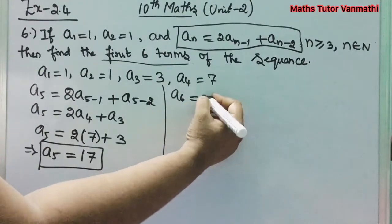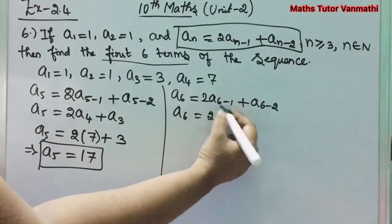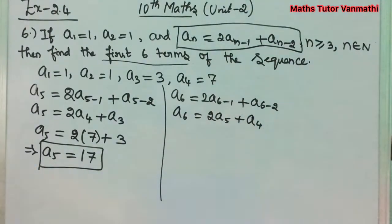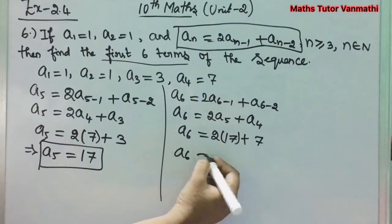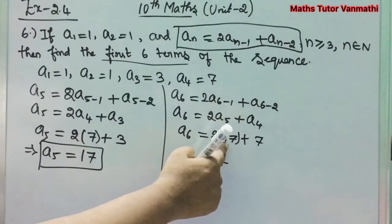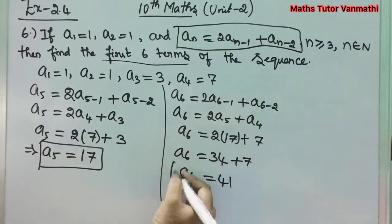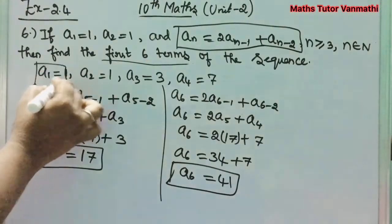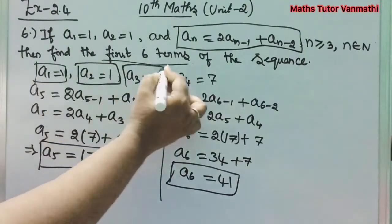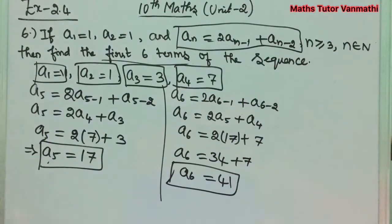Next, finding the 6th term: a_6 = 2a_5 + a_4 = 2×17 + 7 = 34 + 7 = 41. So a_6 = 41. These are the first 6 terms: a_1 = 1, a_2 = 1, a_3 = 3, a_4 = 7, a_5 = 17, a_6 = 41. Up to this, exercise 2.4 is over.